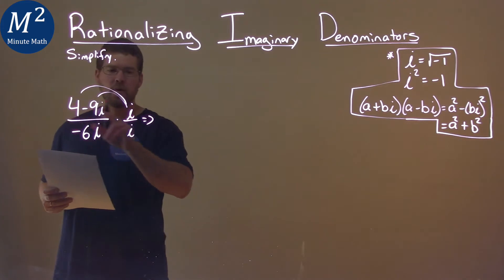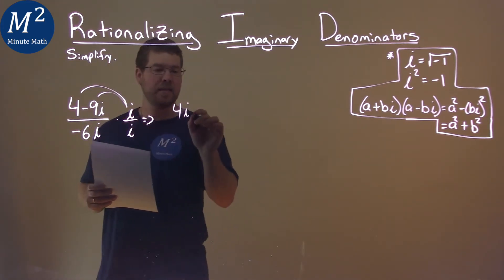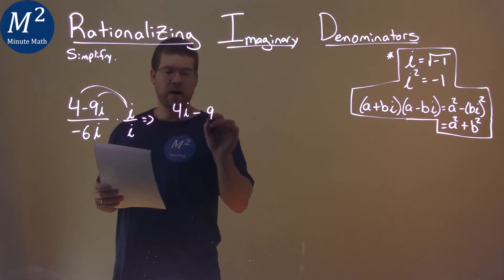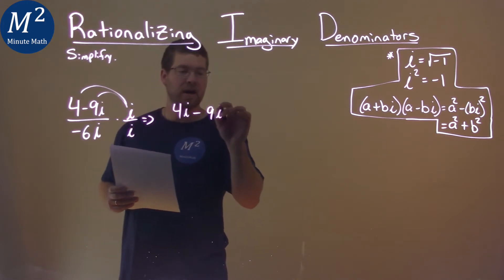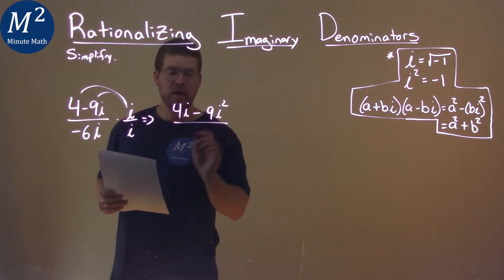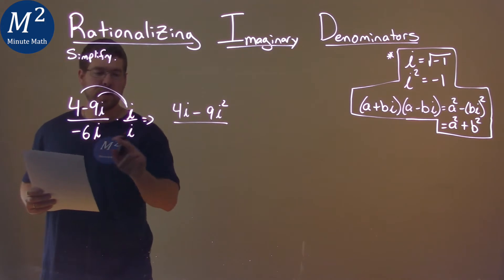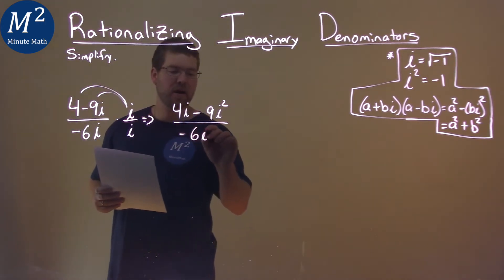So, 4 times i is 4i, and then negative 9i times i is negative 9i squared. Denominator, negative 6i times i, negative 6i squared.